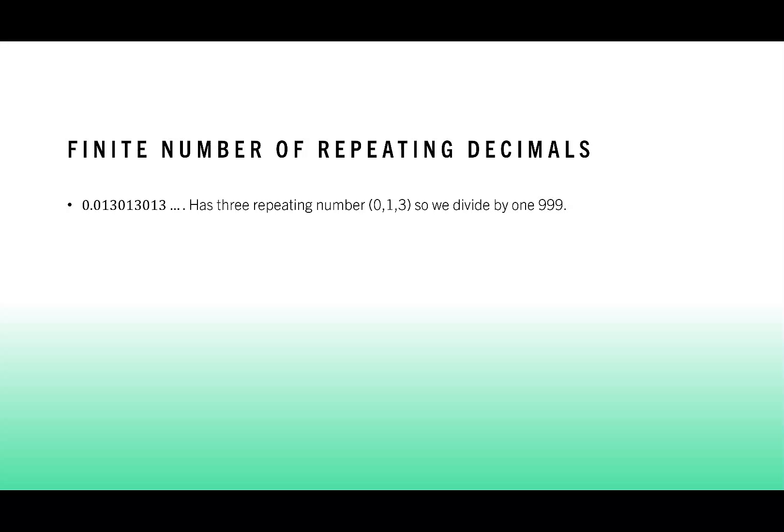Let's consider what happens when we have a 0 as part of our repeating decimals. So this time, I have 0.013, 013, 013. I'm counting that 0 and the number of repeating digits. So 0, 1, and 3 are all repeating. That means I, again, divide by 999. I write that as 13 over 999, which does not reduce. So the 13 over 999 is my final conversion.